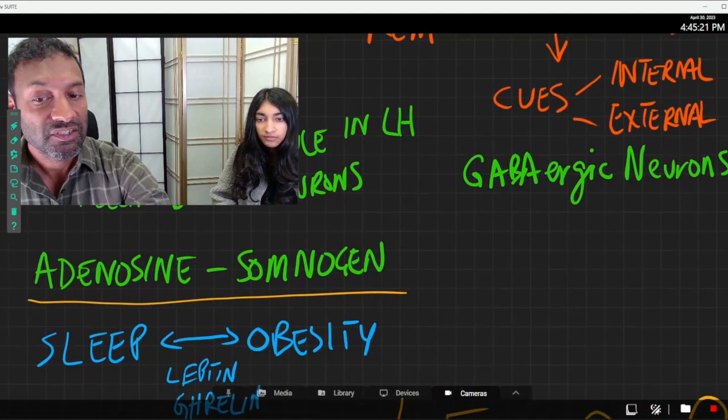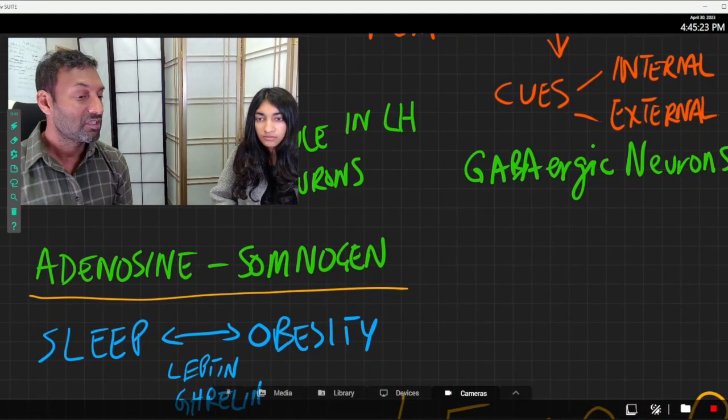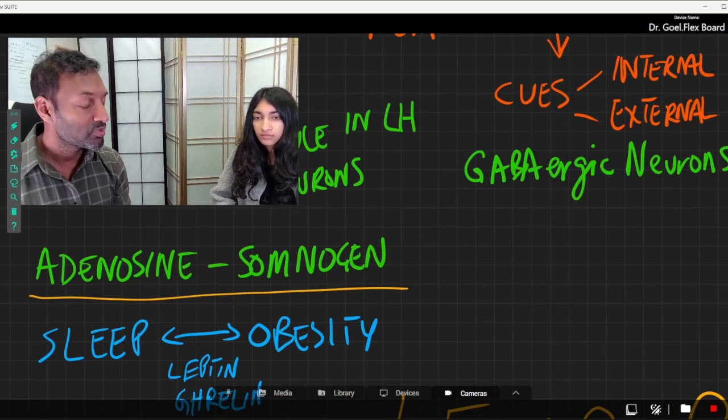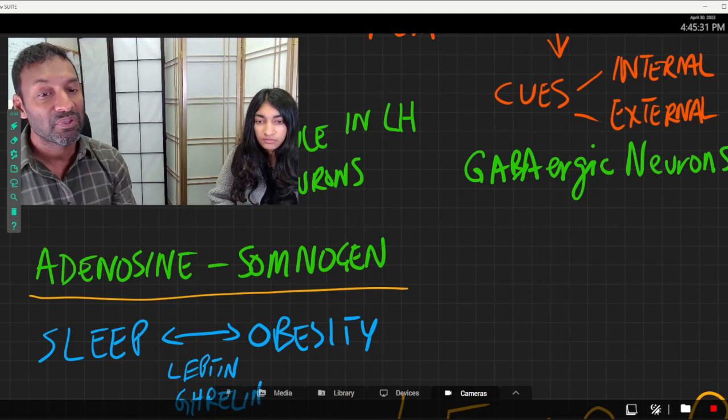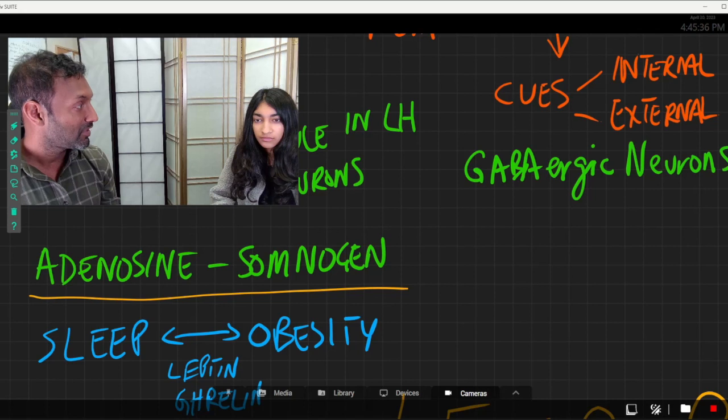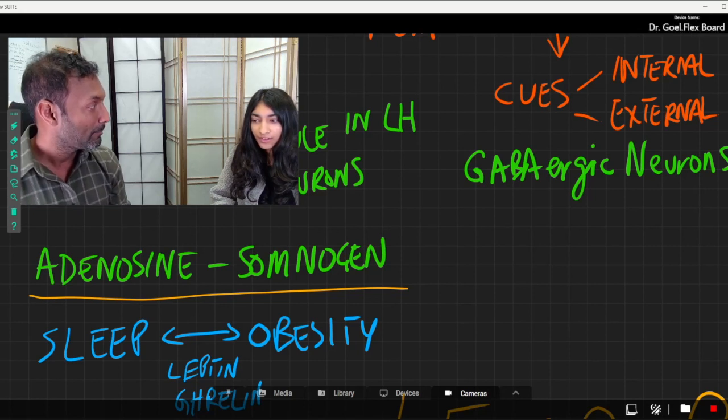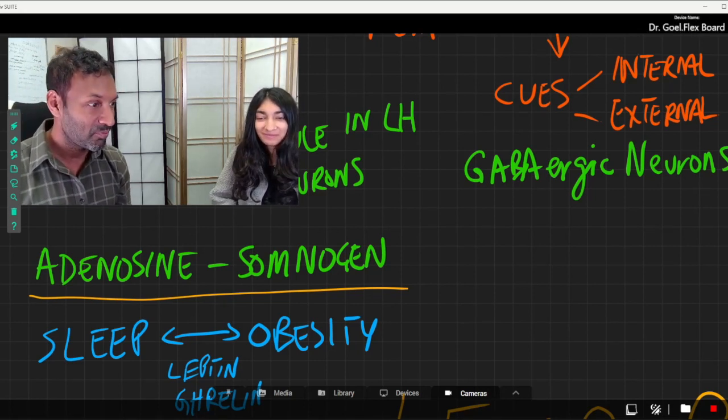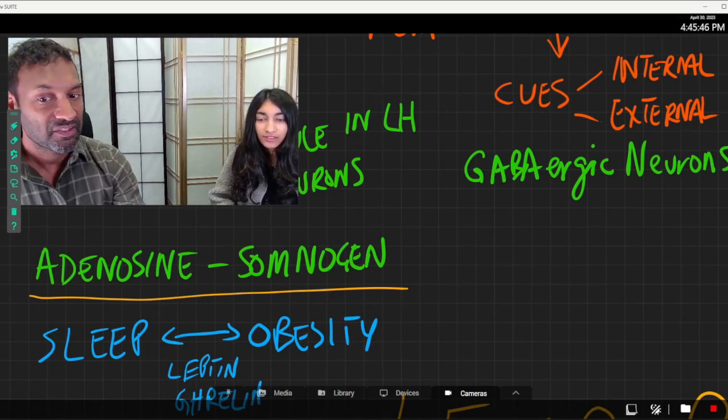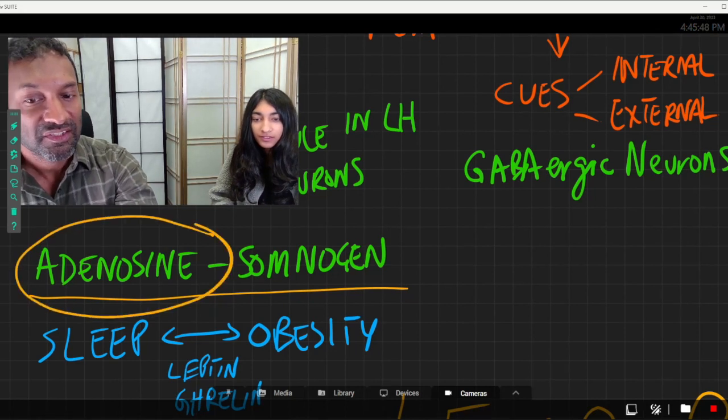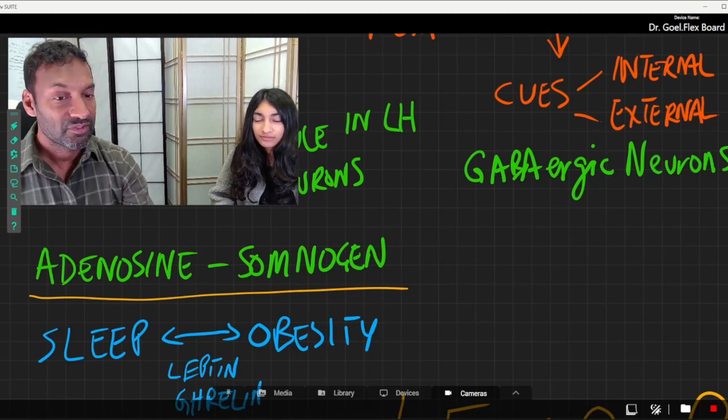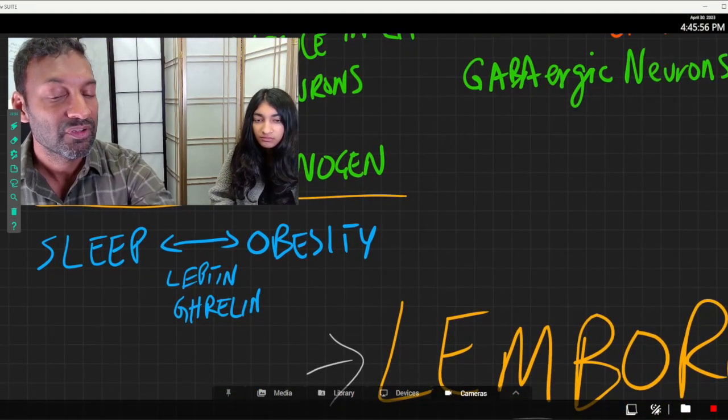I did want to quickly just talk about adenosine. So adenosine is another one of those molecules that we think is responsible for process S. And it just basically builds up as you are awake. And are you familiar with the effect of caffeine on adenosine? No. Yeah. So how does coffee keep us awake? Well, coffee's a stimulant. Yeah. It basically will decrease adenosine. So then that's how people are able to stay awake. So this is how we think caffeine works on keeping you awake.